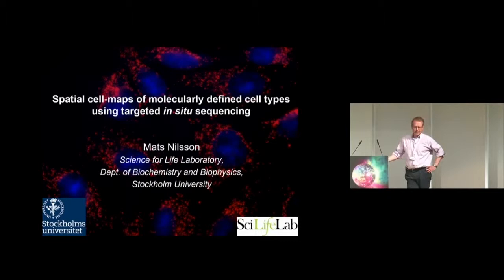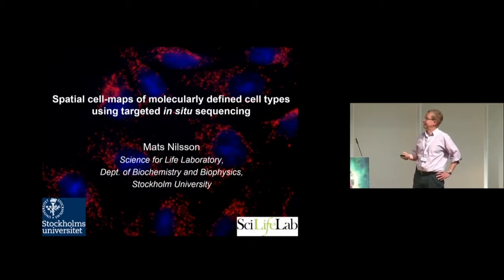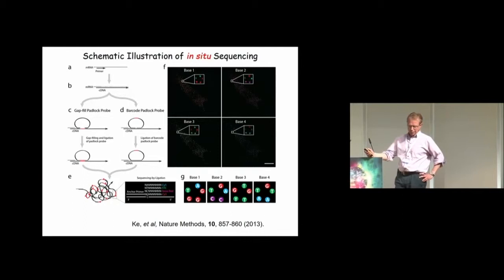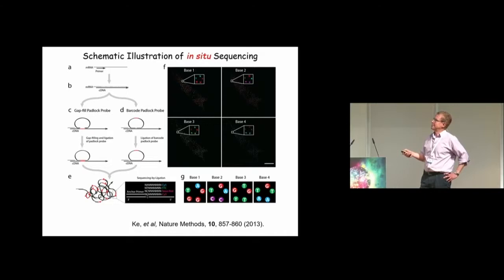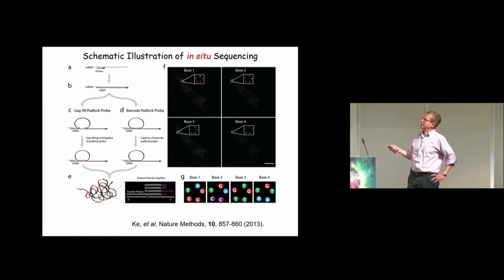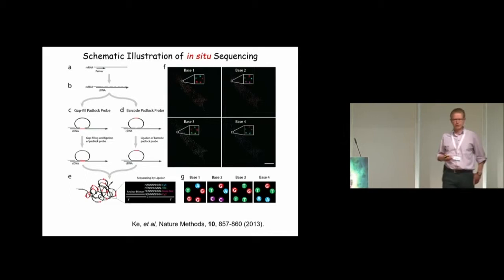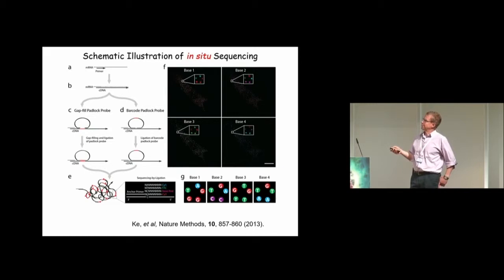I will be talking about our approach to make spatial cell maps of molecular-defined cell types using our targeted in-situ sequencing. It's a targeted approach where we first convert RNA in cells into cDNA and then target a selection of genes or cDNAs with padlock probes that become circularized in a strictly target-dependent manner if the target cDNA is present in a cell. This can only happen if both ends of these circularization probes align with the cDNA and then are joined by a DNA ligase. We barcode these probe molecules with short sequence barcodes that we can decode with next-generation sequencing within the cells and tissues.